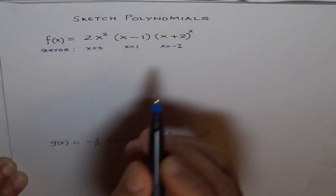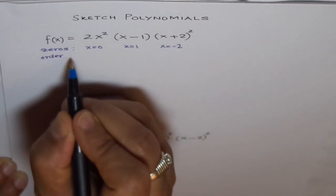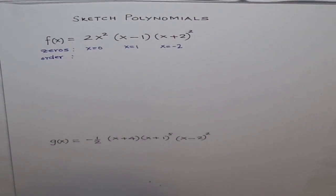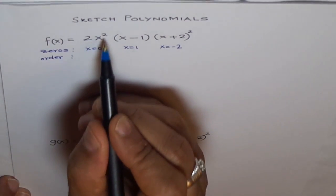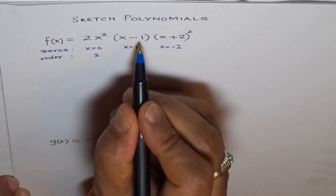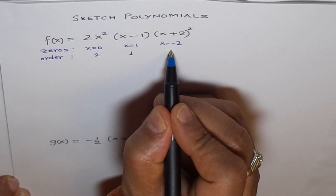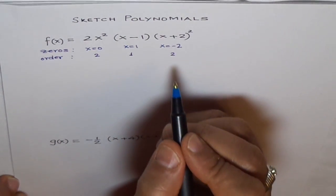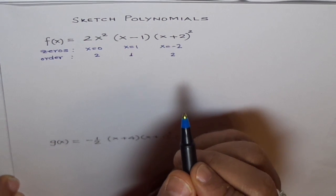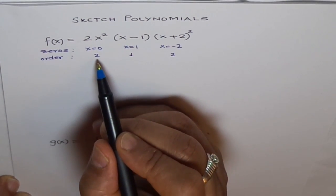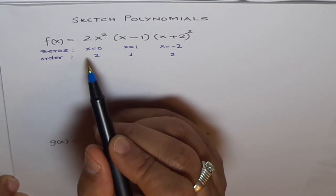Now let's look into the order of these zeros. Order is also called multiplicity - how many zeros at that point? Here we see that the order is 2, here the order is 1, and here the order is 2. If the order is even, then it turns from there, it bounces back like a parabola. And if the order is 1, it just goes through like a straight line.